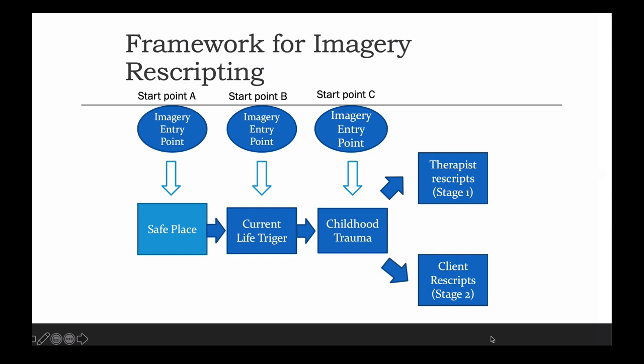You'd be looking at what do you see, what do you feel — get a sense of that feeling, what you can see — and hold onto that feeling, then get an image of a childlike related experience, a childlike trauma, big T or small T trauma. And from that point we would be initially rescripting. So as you can see from the diagram, start point A would be: do the safe place, then move into the current life trigger, then move into a related childlike experience and rescript from the therapist.